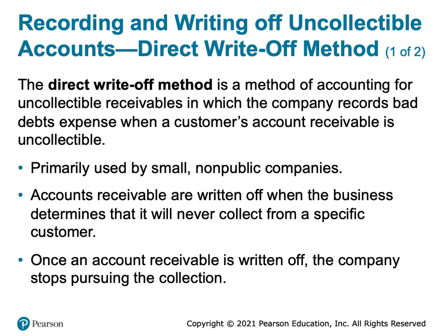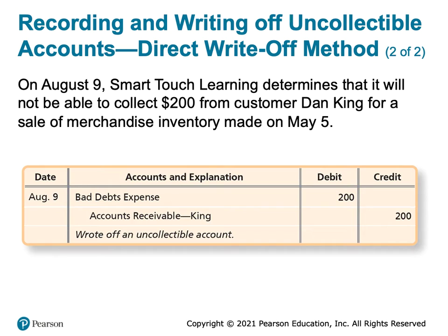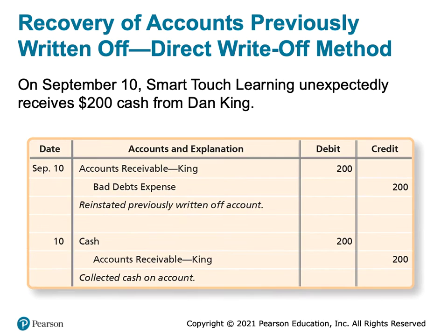Once an account receivable is written off, we stop pursuing collection. We write it off as a loss and let it go. Some companies might turn over delinquent receivables to an attorney or collection agency, but generally the company does not expect to receive any future payment. This slide shows an example: on August 9th, we determined we're unable to collect $200 from customer Dan King for merchandise sold on May 5th. We debit bad debts expense — increasing that expense — and credit accounts receivable, decreasing that asset, eliminating it on the day we write off this customer.